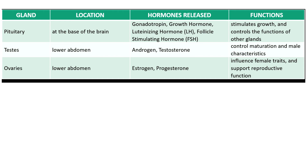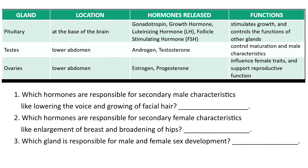To check your learning, please answer these three questions. Number one: which hormones are responsible for secondary male characteristics, like deepening of the voice and growing of facial hair? Number two: which hormones are responsible for secondary female characteristics, like enlargement of the breast and broadening of hips? Number three: which gland is responsible for male and female sex development? The answers: number one — androgen and testosterone; number two — estrogen and progesterone; number three — the testes and ovaries.